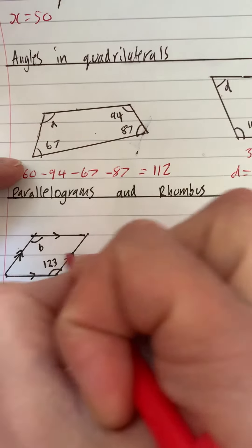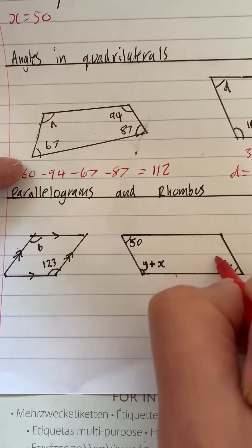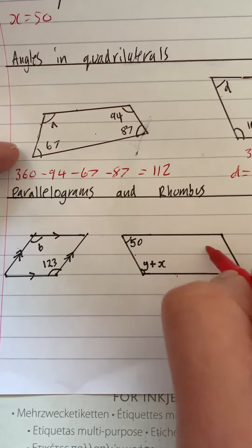So all these sides would be the same, these two would be the same size, and these two would be the same size. Now with this one, we've got a little bit of a trick.